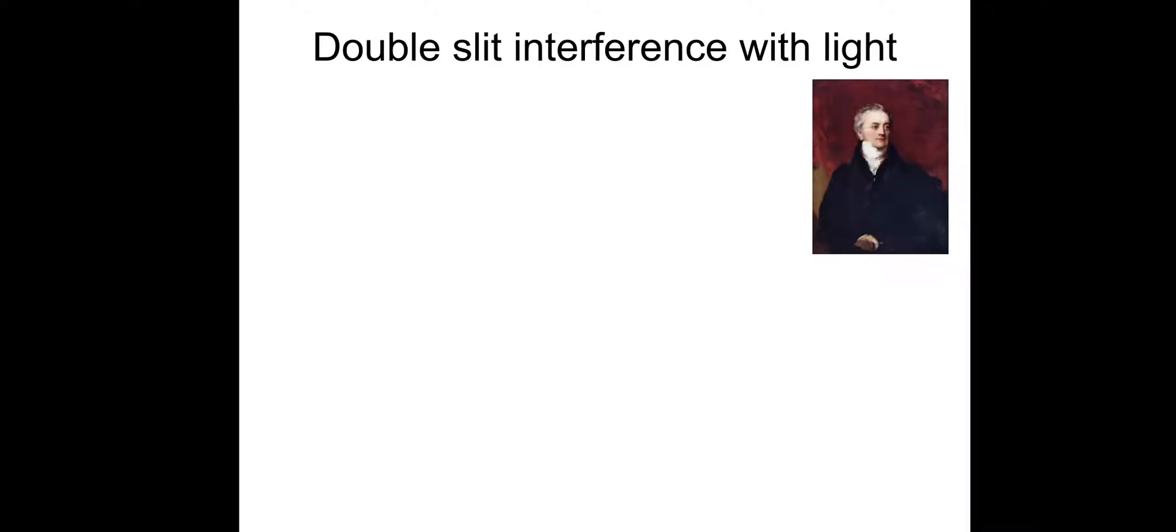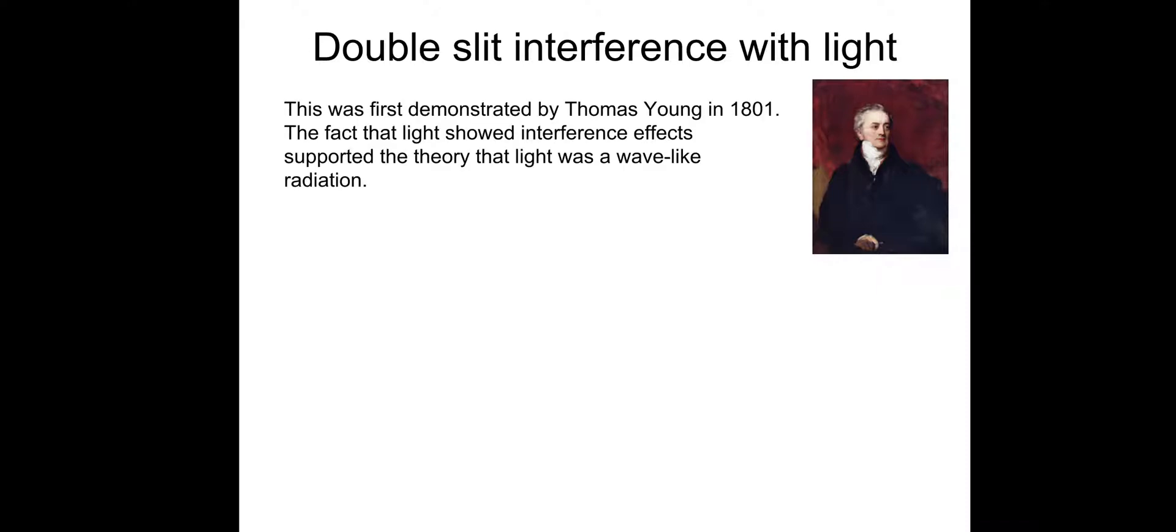Double slit interference with light was first demonstrated by Thomas Young in 1801. The fact that light showed interference effects supported the theory that light was wave-like radiation. We have to bear in mind that back in 1801, the photoelectric effect had not been discovered, and there was a big discussion between scientists on whether light was a particle or a wave. This was strong evidence for light acting as a wave.